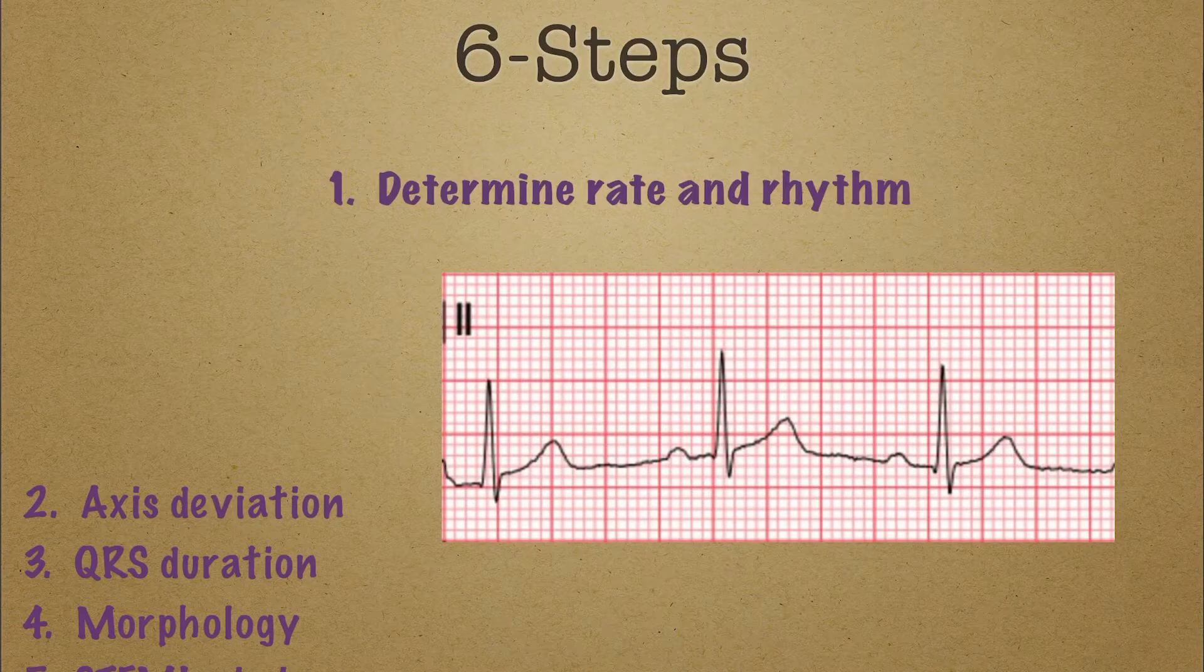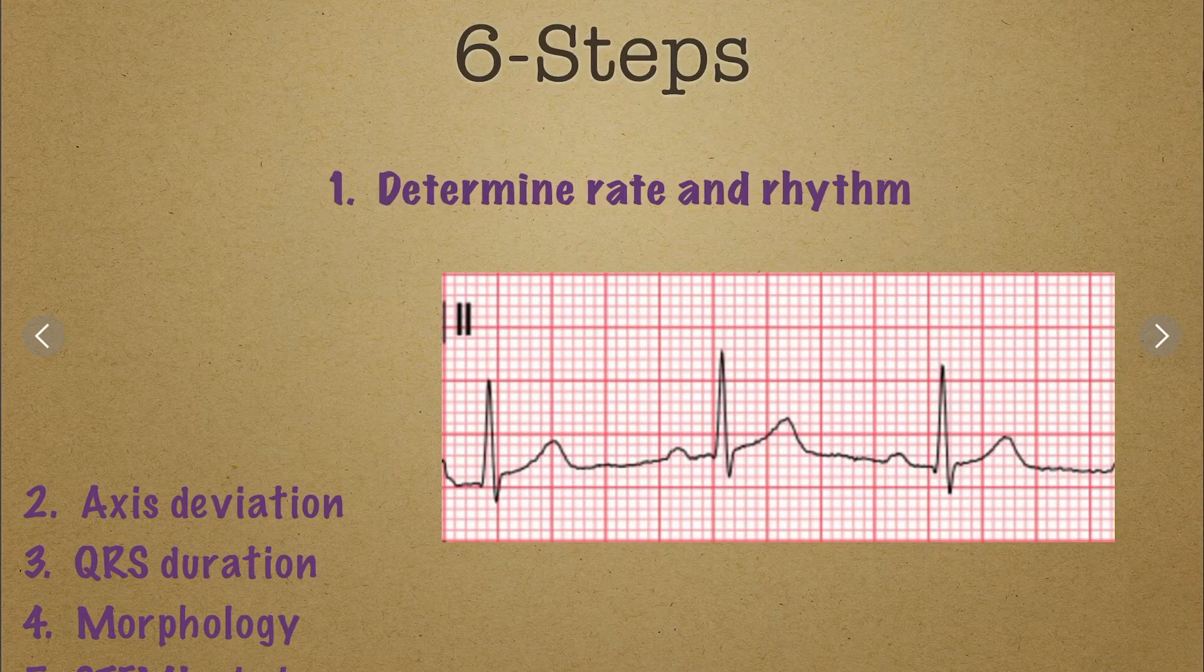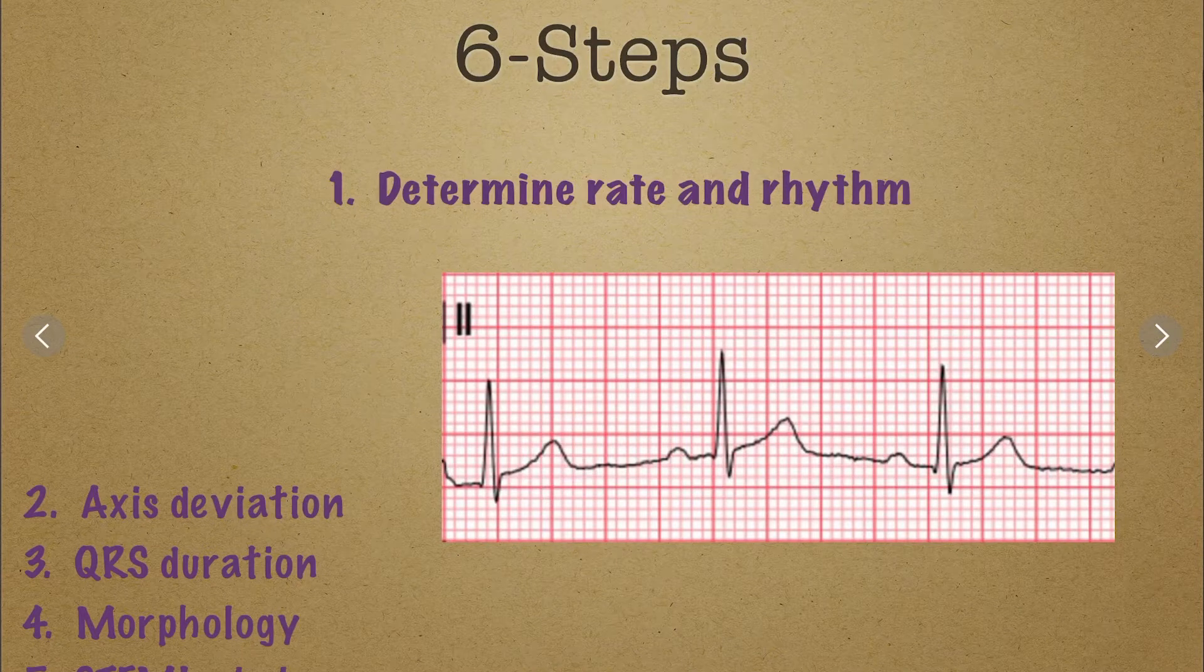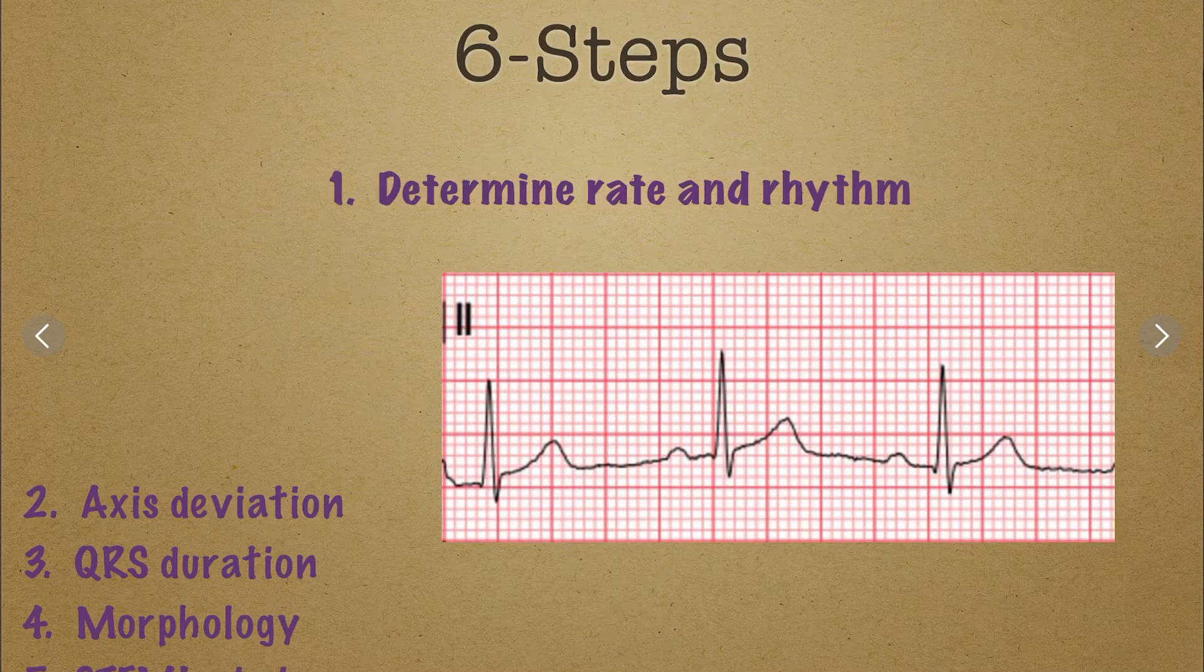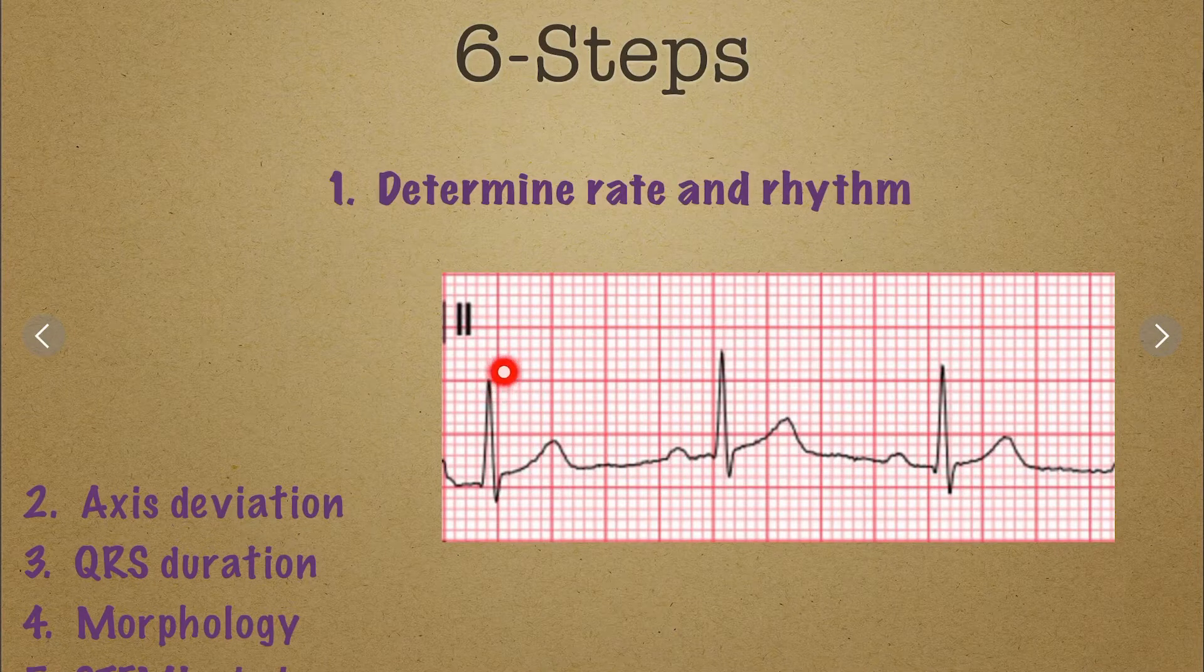So step number one is just like you always have, you have to determine the rate and rhythm. So all that stuff that you learned last semester about how many boxes and is it regular, irregular, and PRI, and QRS interval, and all that. Looking at this one here, I count, I think that one's pretty close in line. I got one,